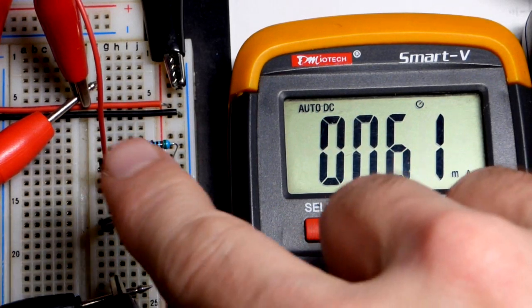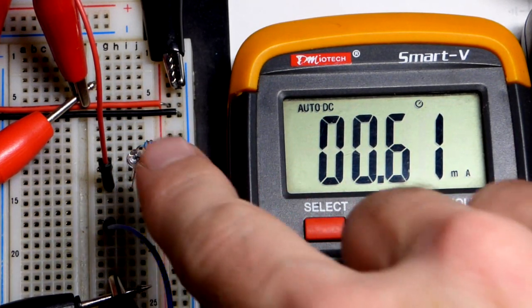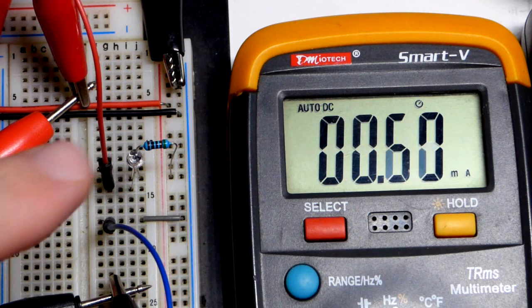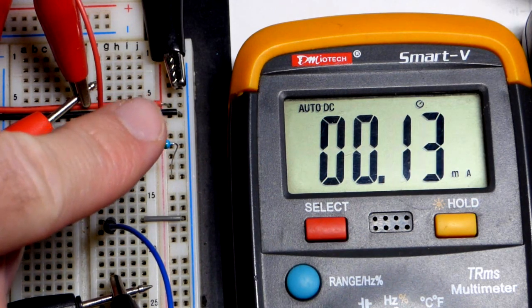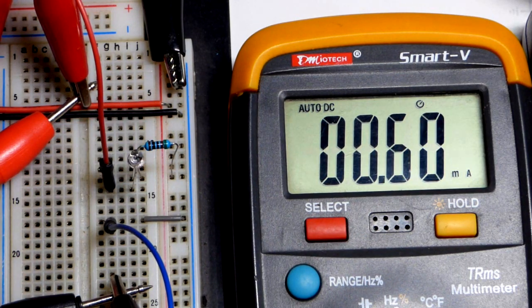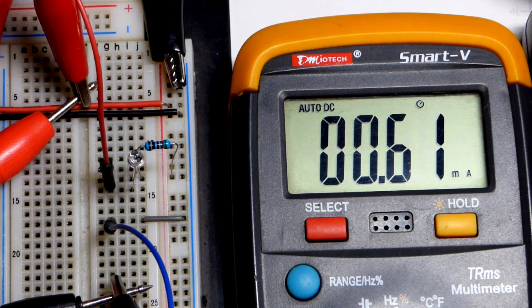Alright, so we're going to do another video with the photodiode right there. You can see when I darken it we get a lower amount of current, now we got more current. So it's not like a light dependent resistor.